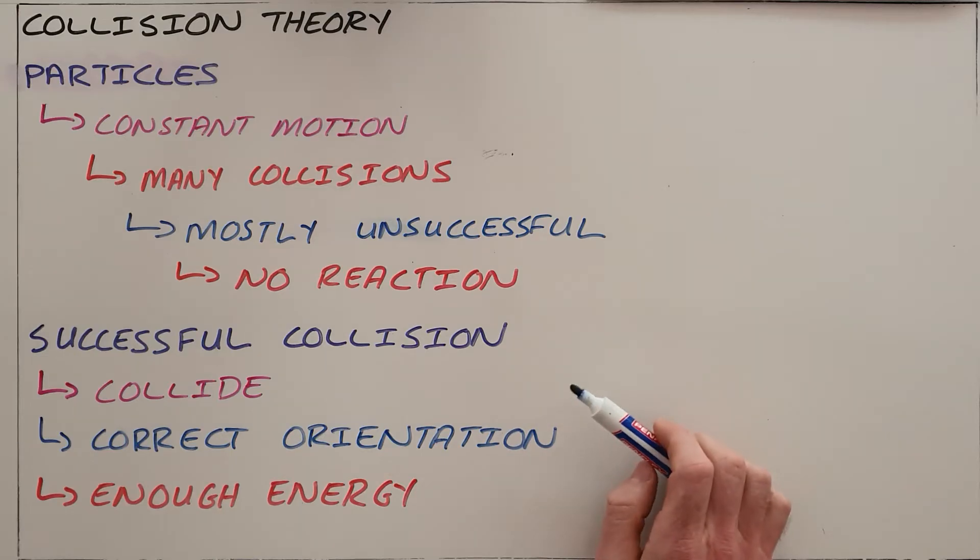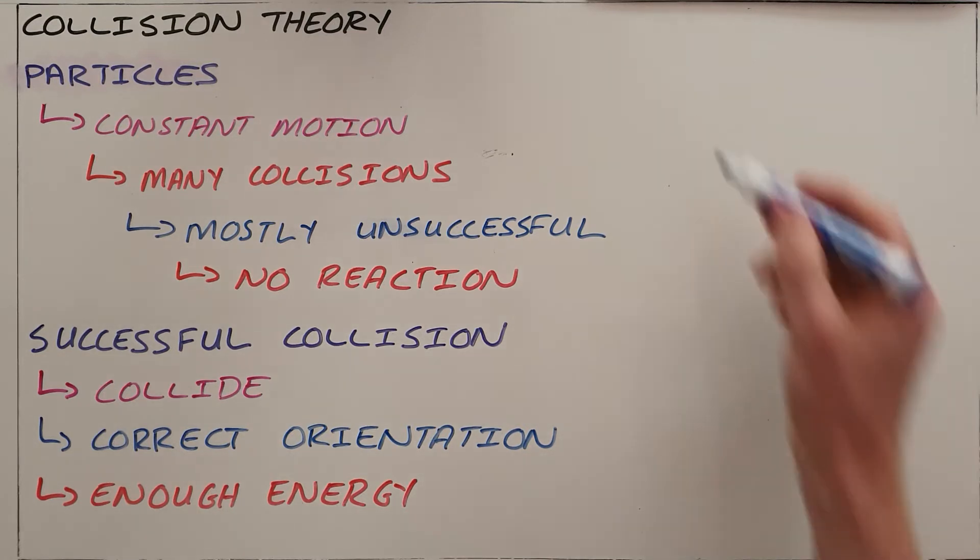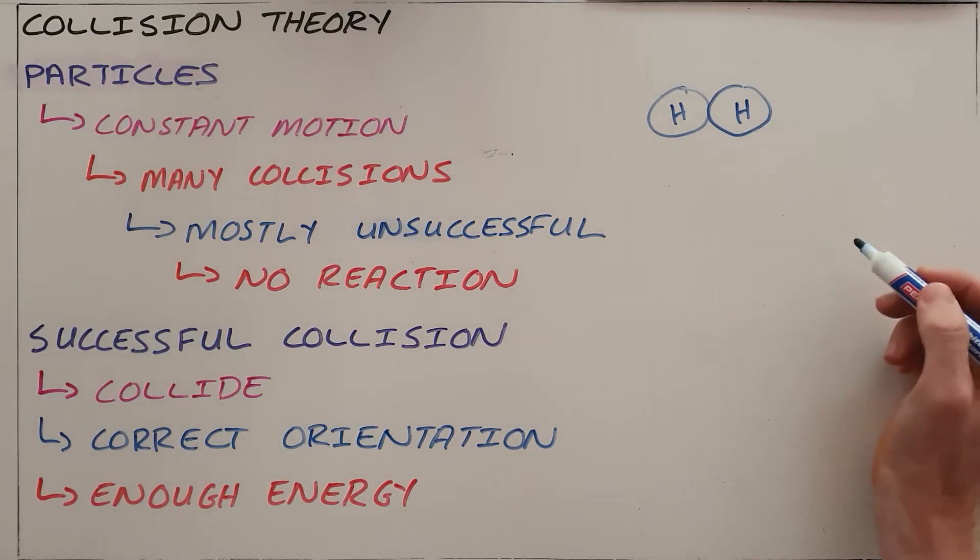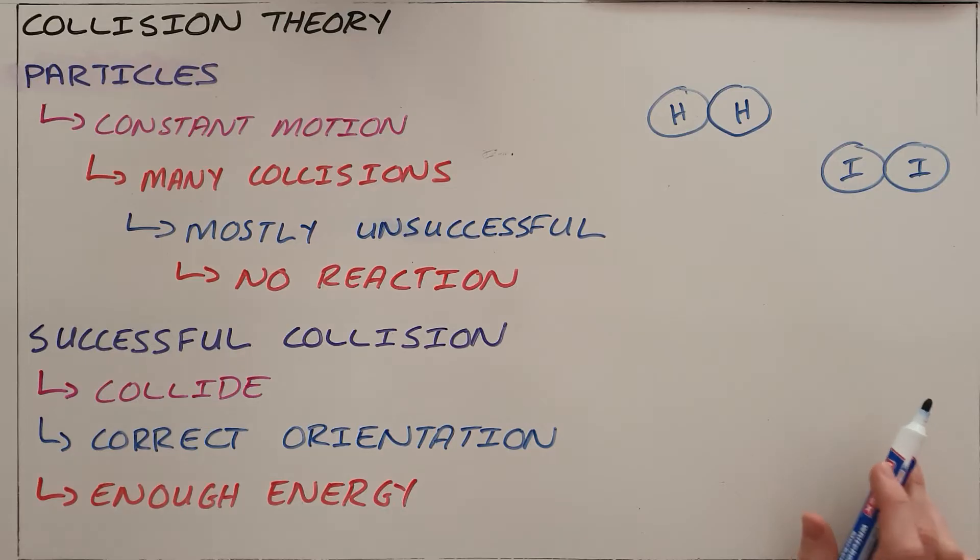What collision theory tells us is that there are three requirements in order for a successful collision to occur, which means that a chemical reaction can happen. If we look at a hypothetical reaction between hydrogen, which we know is a diatomic element so it comes in the form H2, and iodine, which is also a diatomic element in the form I2.